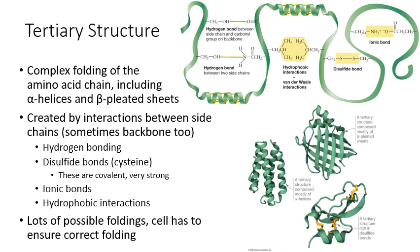The tertiary structure is always stabilized by interactions between the side chains of the amino acids — unlike secondary structure, which is stabilized by backbone hydrogen bonds. Occasionally there may be an interaction between the backbone of one amino acid and the side chain of another, but usually it will be side chains interacting with other side chains. There are different types of interactions that can stabilize tertiary structure.